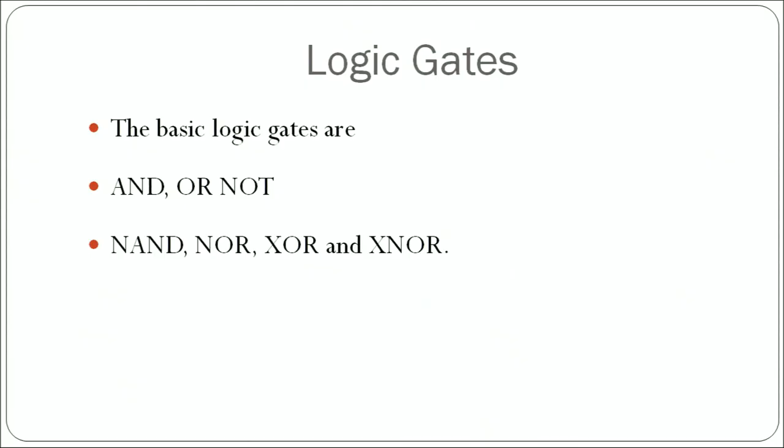The basic logic gates are AND, OR, NOT, NAND, NOR, EXOR, and EXNOR. AND, OR, and NOT are the basic operations, while NAND, NOR, EXOR, and EXNOR are combinations of operations — the complementary or supplementary of the basic operations. We will first learn about the basic operations: AND, OR, and NOT.